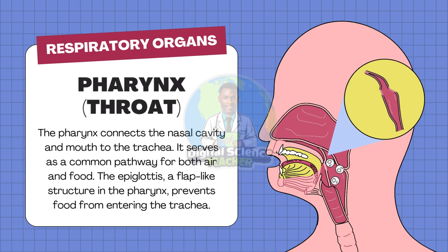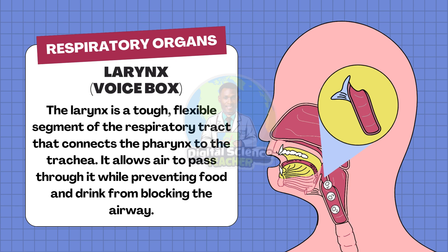The pharynx, or the throat, connects the nasal cavity and the mouth to the trachea. It serves as a common pathway for both air and food. The epiglottis is a flap-like structure in the pharynx and it prevents food from entering into the trachea when we swallow food. The larynx, or voice box, is a tough, flexible segment of the respiratory tract that connects the pharynx to the trachea. It allows air to pass through while preventing food and drink from blocking the airways.